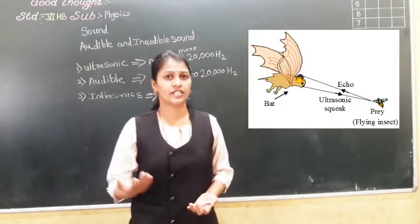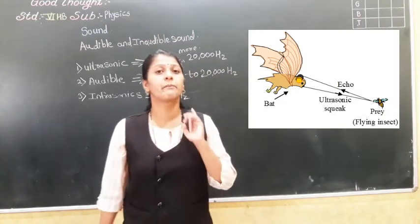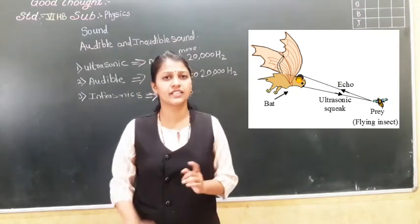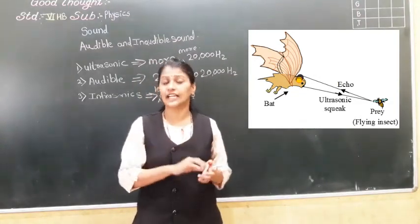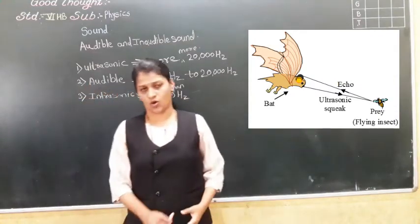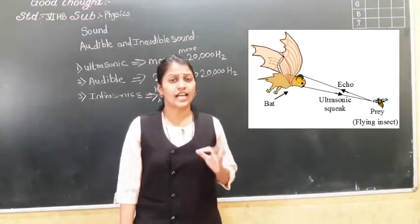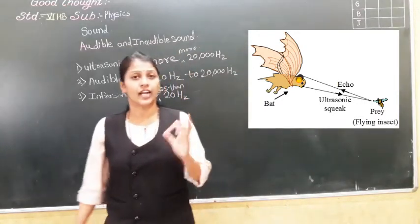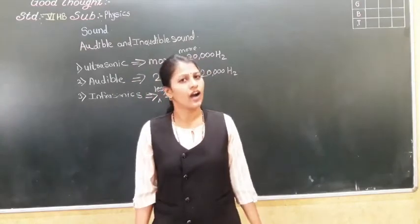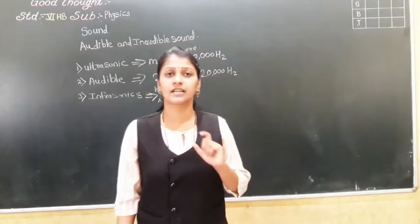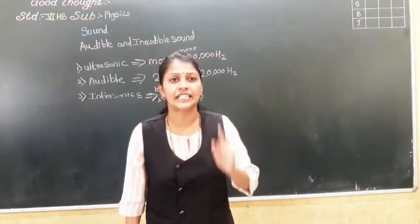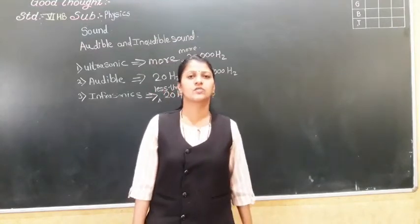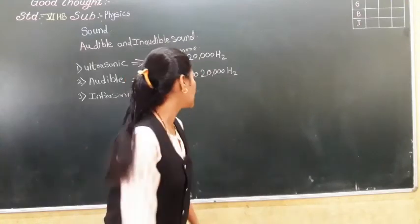Bat uses ultrasonic sound to capture prey. If an obstacle is near to the bat, they use the ultrasonic sound. There are animals like dog, leopard, dolphin — these animals can hear ultrasonic sound, which is more than 20,000 hertz.